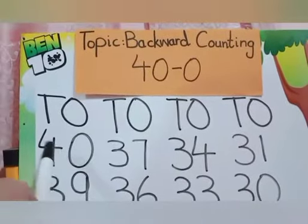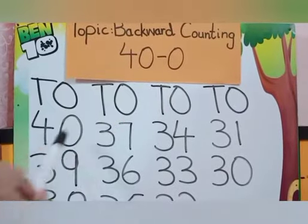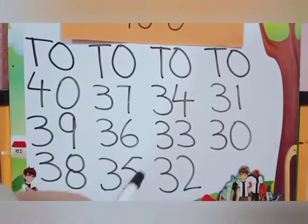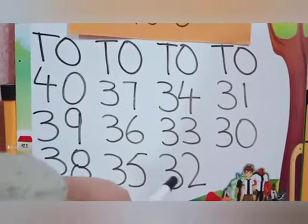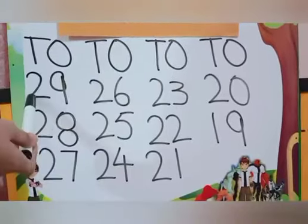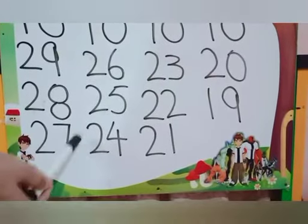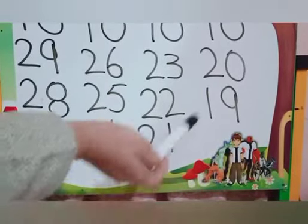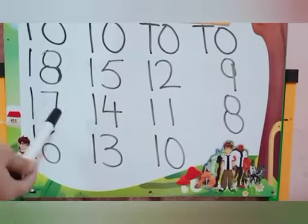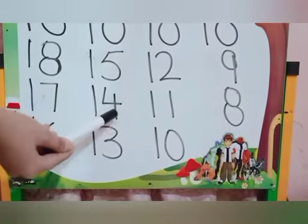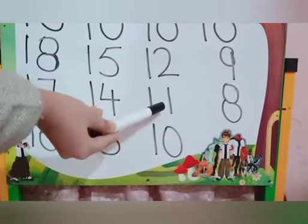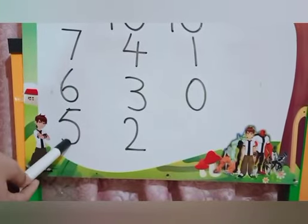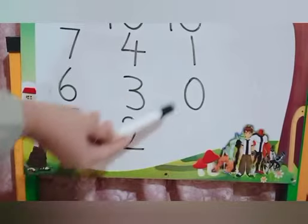Okay, let's start the backward counting — 42 to 0. 40, 39, 38, 37, 36, 35, 34, 33, 32, 31, 30, 29, 28, 27, 26, 25, 24, 23, 22, 21, 20, 19, 18, 17, 16, 15, 14, 13, 12, 11, 10, 9, 8, 7, 6, 5, 4, 3, 2, 1, 0.